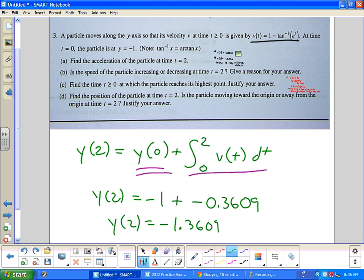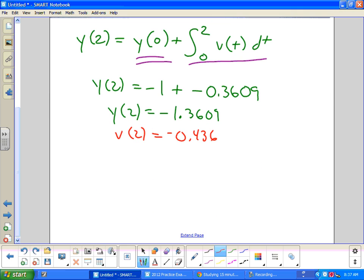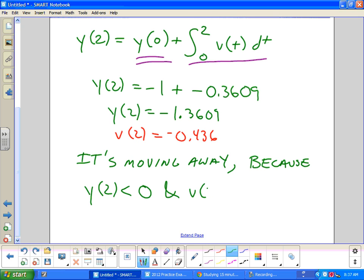Is the particle moving toward the origin or away from the origin at time equals 2? Is it moving toward the origin or away from the origin? Now, it's at this position. What is the velocity at time 2? We figured that out way back here. We had in letter B that velocity of 2 was negative 0.436. So is it moving towards or away from the origin? It's moving away. It's at a negative position and it's moving negatively. Does that make sense? So it is moving away. First of all, make a statement. Guys, one thing I noticed when I was grading APs, you guys don't say yes or no. It says stuff like, is it increasing or decreasing? First thing you say is, boom, answer the question. It's moving away. Why? Because y of 2 is less than 0 and v of 2 is less than 0. Boom. Point for that.